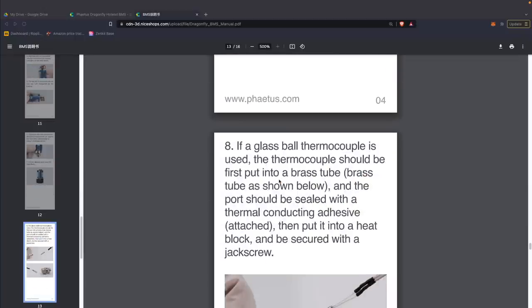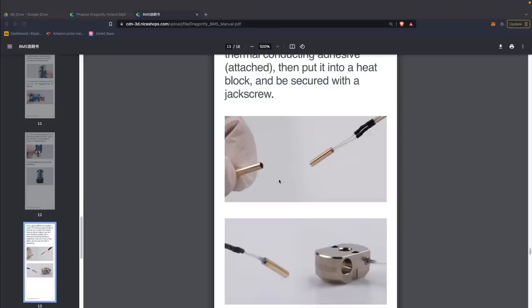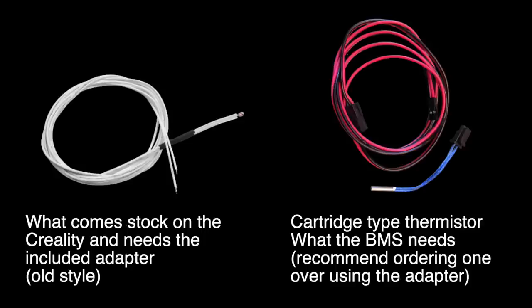That said, with the BMS they intend for you to use a brass tube and your existing bulb type thermistor. I'm not doing that. I'm upgrading mine to a 50 watt heater cartridge and a cartridge style thermistor, and so I would highly recommend getting a cartridge style thermistor when getting this rather than using the sort of adapter tube that they include with it.